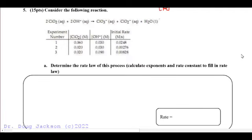Number five, we are going to determine the rate law using the initial rates method here. We've got three experiments, two reactants, and the initial rates are given.